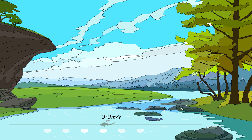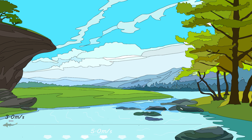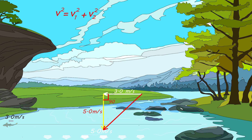Find the resultant velocity for a fish swimming at 3.0 m/s across a river moving at 5.0 m/s. The fish has two velocity components. Since the fish's motion is perpendicular to the river, we apply the Pythagorean theorem. The river velocity is −5.0 m/s (downward) and the fish velocity is −3.0 m/s (leftward).